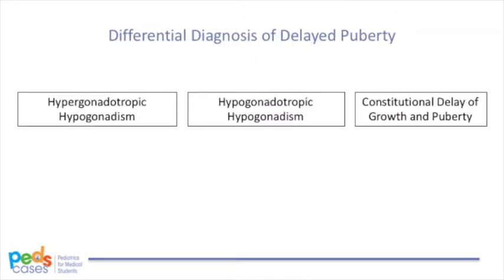Now that we've introduced the possible mechanisms behind delayed puberty, let's look at the different causes. These causes can be organized based on their mechanisms — in terms of hypergonadotropic hypogonadism or hypogonadotropic hypogonadism. There is also a condition that stands on its own because it's a normal variant and the most common cause of delayed puberty: constitutional delay of growth and puberty. We encourage you to listen to a PedsCases podcast on the approach to short stature for more detailed information.